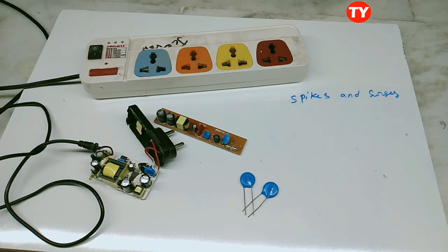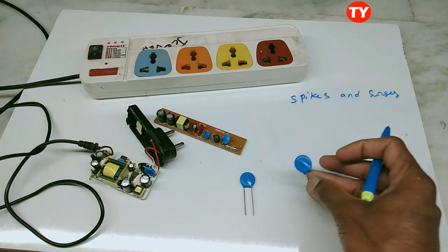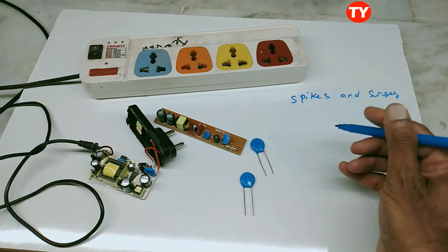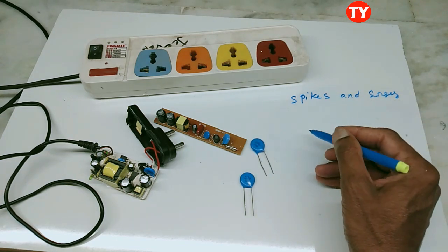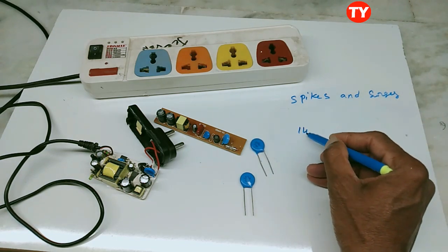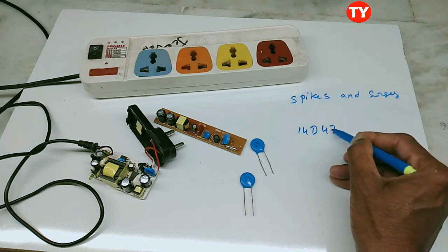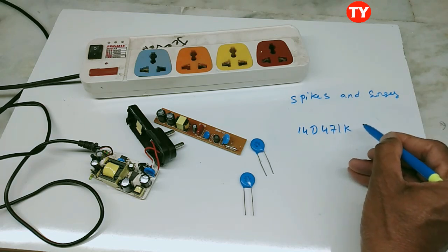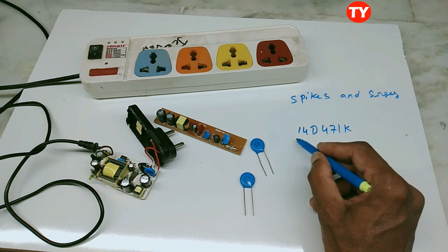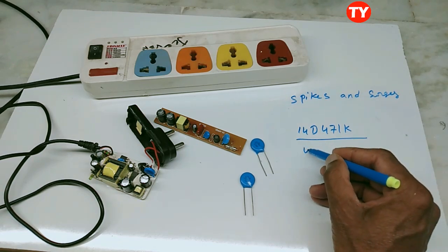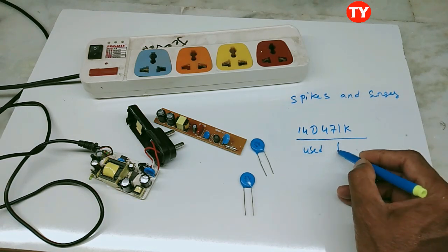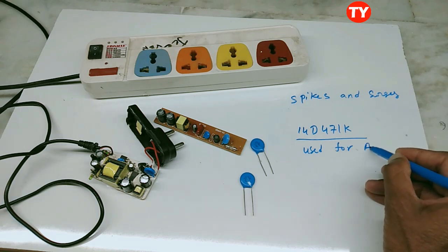Most electric and electronic components used to protect from surges and spikes use MOV. Mostly 14D471K varistor is used for AC 230 volts.